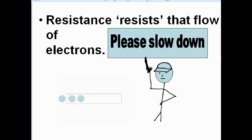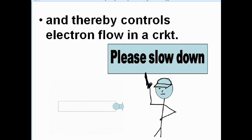Resistance resists that flow of electrons. Please slow down, and thereby controls electron flow in a circuit.